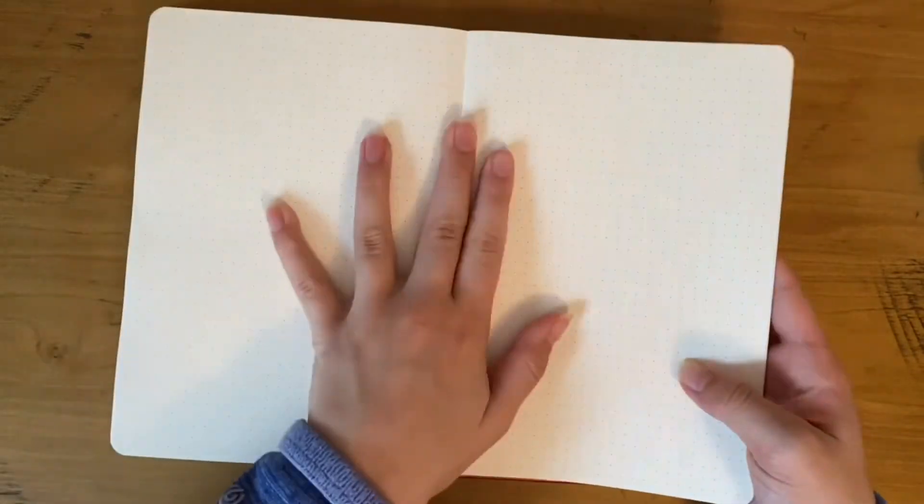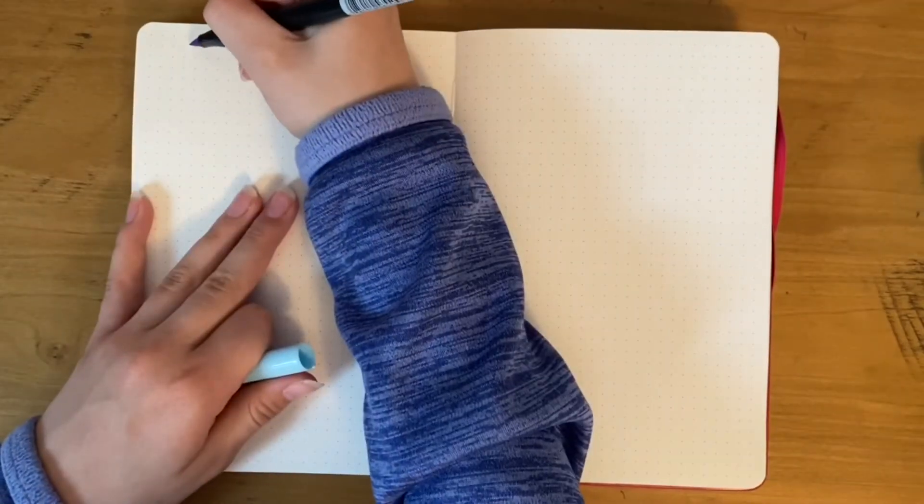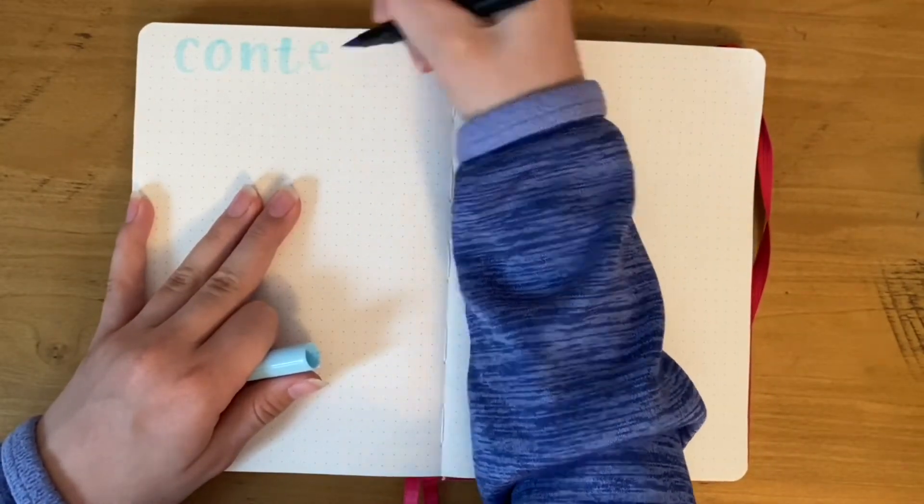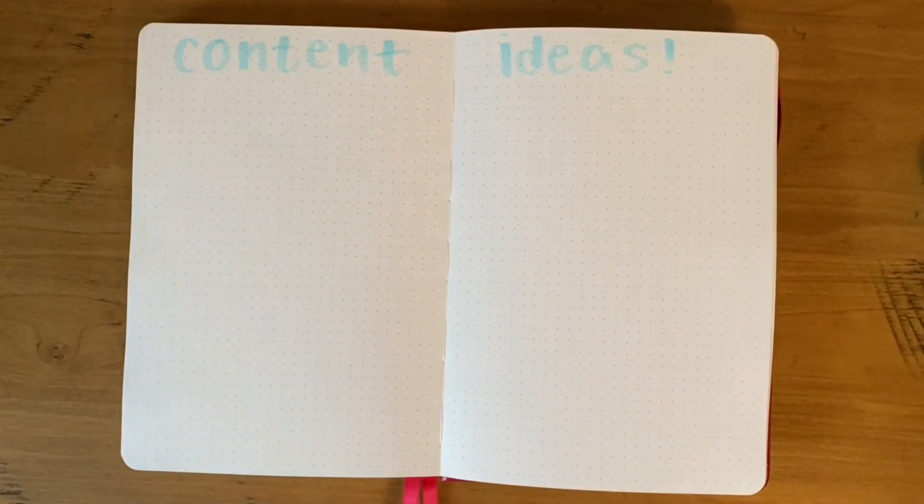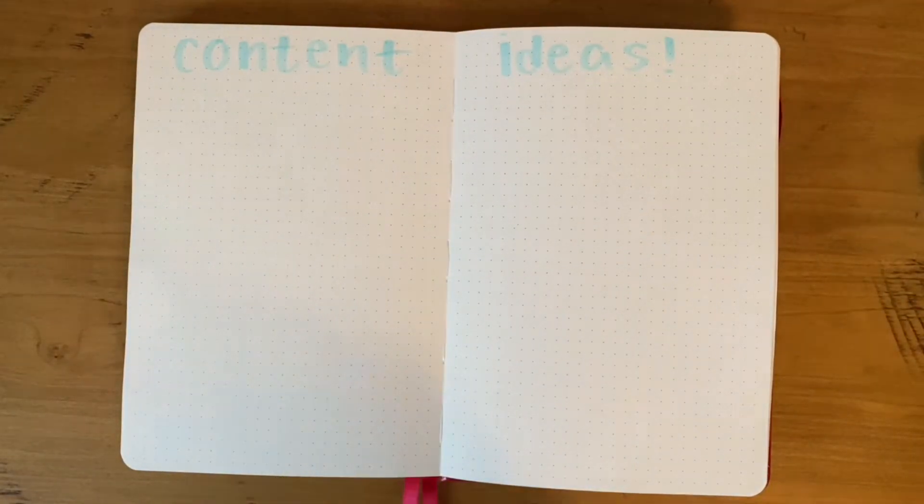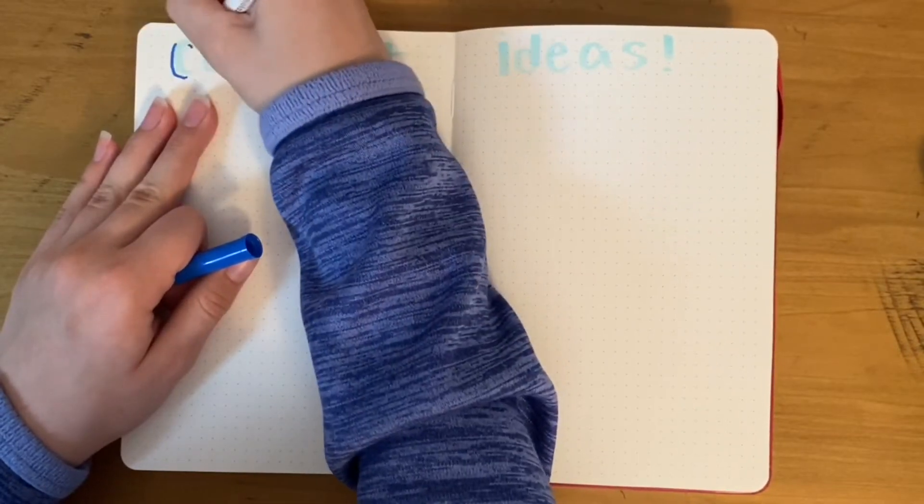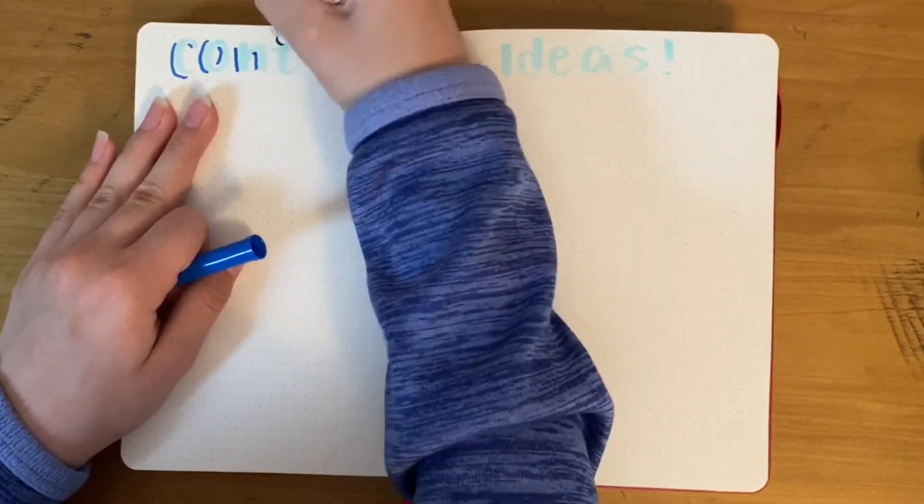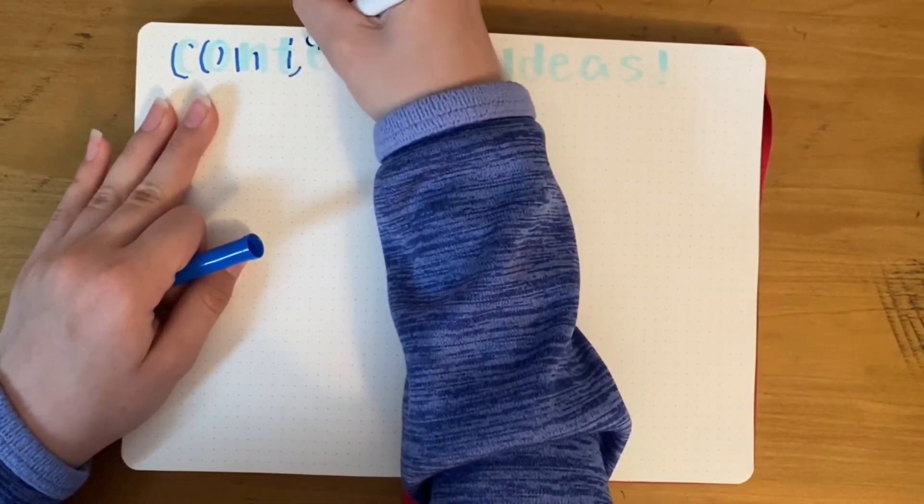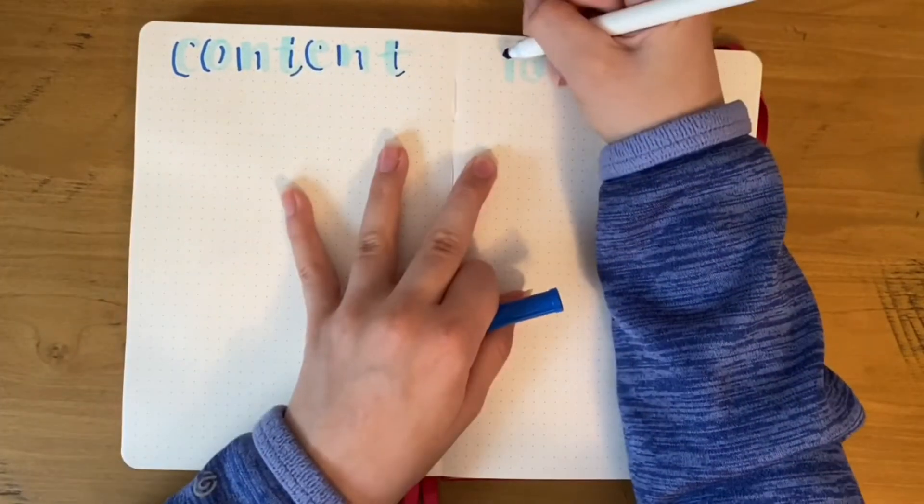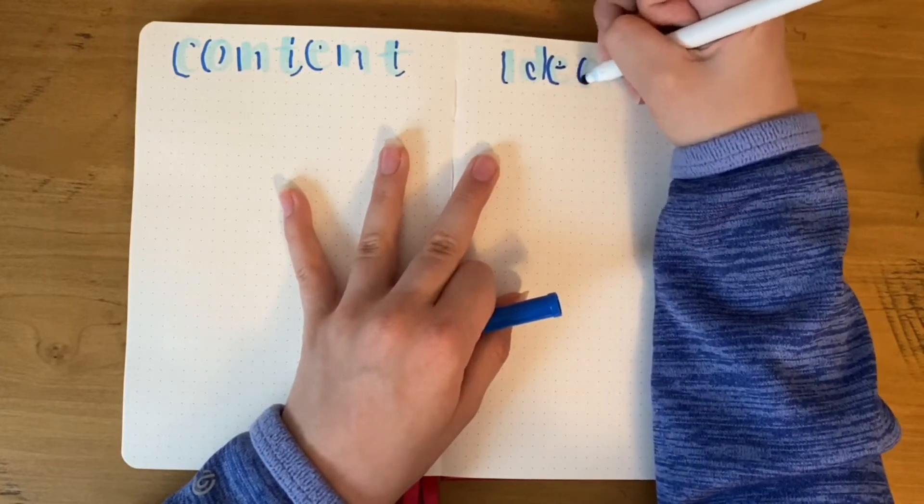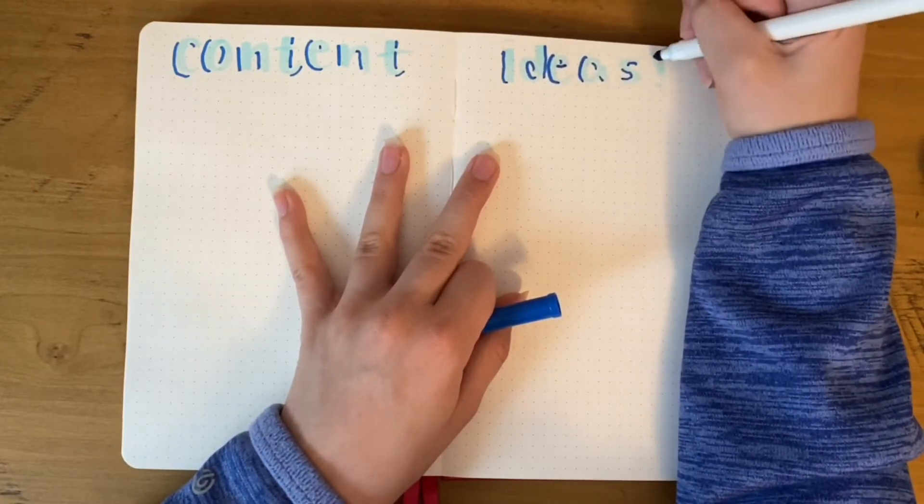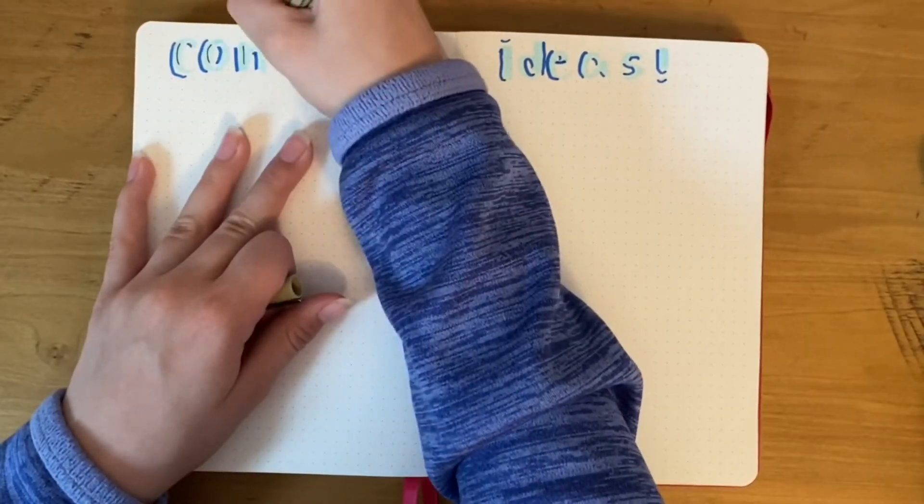Moving to the back of the journal, I decided to put my content ideas and brain dump in the back because in my other journal, I do all my collections in the back. I'm starting out with another Tombow dual brush pen from that same pastel pack, writing out 'content ideas,' and then adding a big dark blue drop shadow. It didn't work out as well as I thought, but it looked cute in the end.